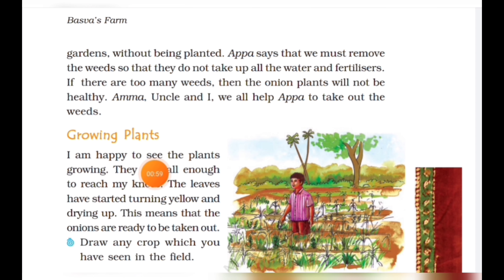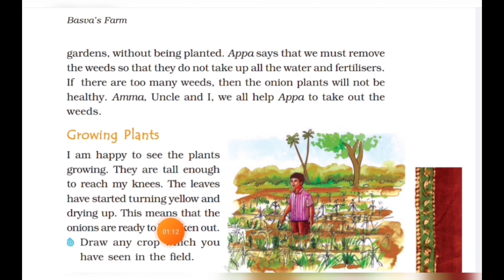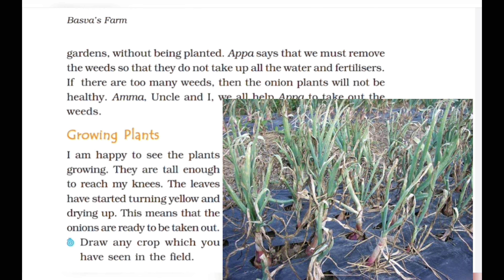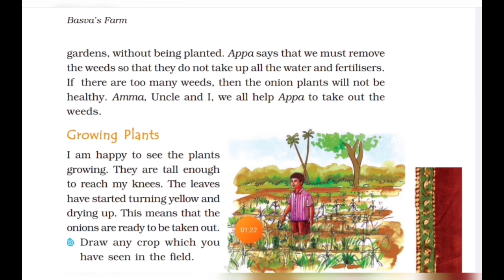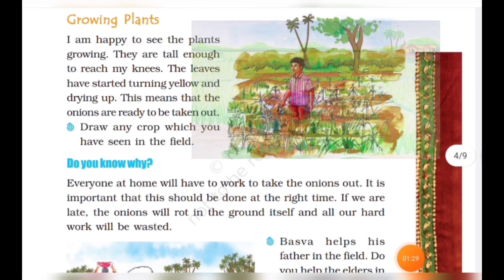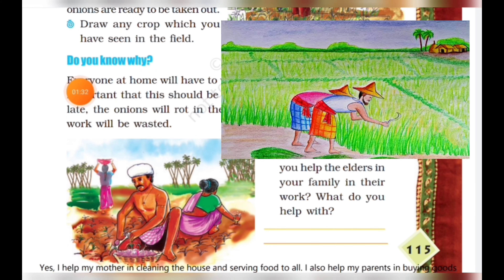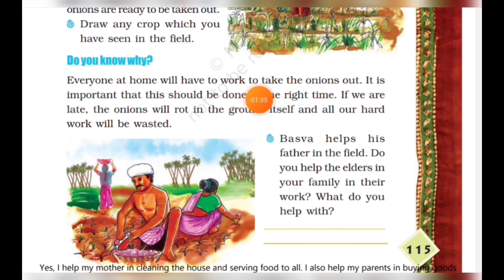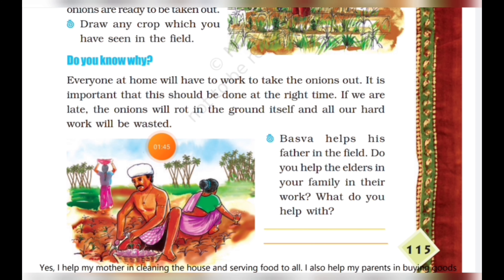I am happy to see the plants growing — they are tall enough to reach my knees. The leaves have started turning yellow and drying up, which means the onions are ready to be taken out. Everyone at home will have to work to take the onions out; it is important this is done at the right time. If we are late, the onions will rot in the ground and all our hard work will be wasted.